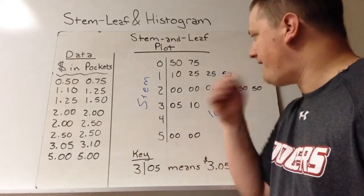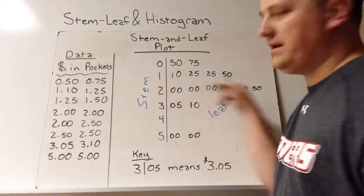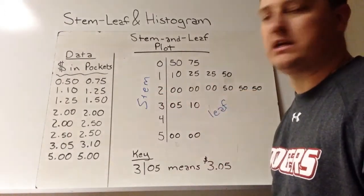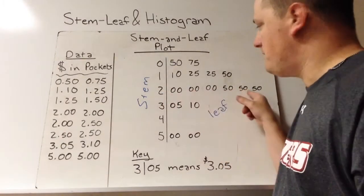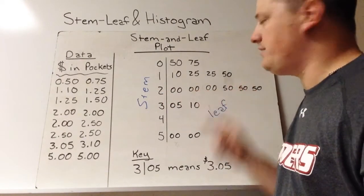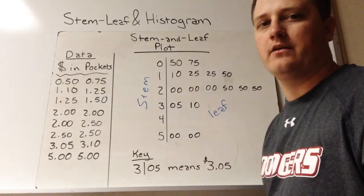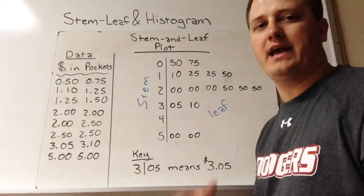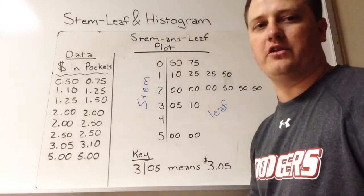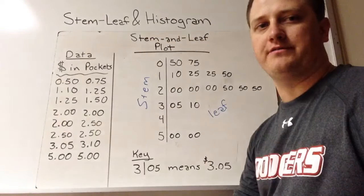What we can see here is that the grouping of two dollars has the most data, and we can see what those individual data points are. So it groups the data and allows us to look at the individual parts.